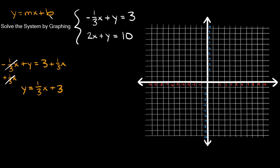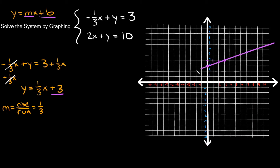In slope-intercept form, b is your y-intercept and m is your slope. Our y-intercept is positive three, so plot a point on the y-axis at three. Our slope is one-third, meaning rise over run — go up one and over three to the right. Plot that second point and draw a straight line. This line represents the first equation.